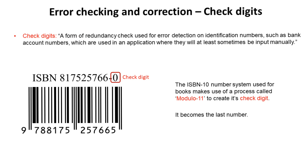Now on to check digits. This is a form of redundancy check used for error detection on identification numbers such as bank account numbers. These are used in many applications where they will at least sometimes be input manually. When long strings of numbers are input manually it's obviously prone to human error, and a check digit helps to get around this. Here's an example of a long number that can often be entered manually — this is the ISBN-10 number system used for books, and it uses a process called modulo 11 to create and check the check digit. The actual last number on an ISBN code, if you look at the back of a book, is the check digit.